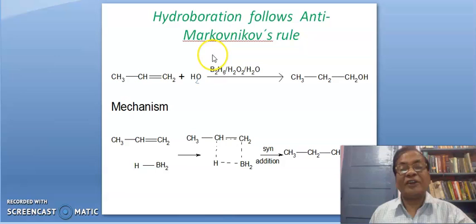we will get n-propyl alcohol. This hydroboration is following anti-Markovnikov's rule, meaning positive part of addendum will add to the least hydrogenated carbon. So hydrogen will come here and OH will come here, leading to n-propyl alcohol.